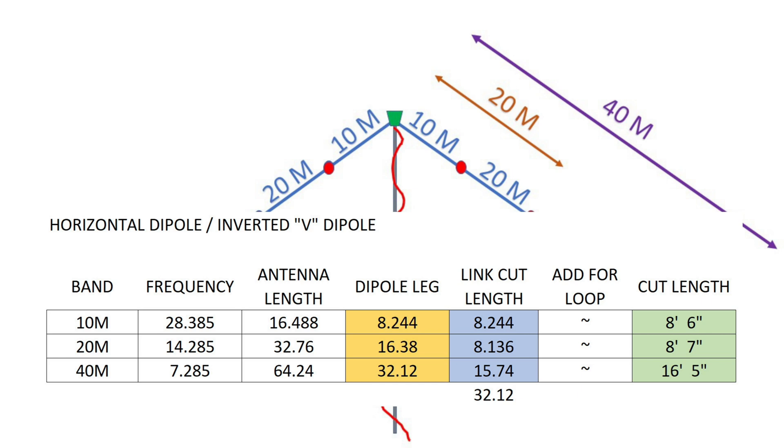I'm right in the sweet spot of the general class phone section. So 28.385. And I'm doing the same thing on 20 meters and 40 meters. I'm getting right in the middle of phone for general. You would go into your dipole calculator, put in the frequency you want to be resonant on. You'll get this full length. You'll get how long each dipole leg should be. Here's where you need to pay attention. On your 10 meter section, on each side, you're going to want a piece 8.244 feet. I'm cutting my wire to about 8.6. I'm doing that because I want it to be a little bit long and I'm going to trim it in the field.